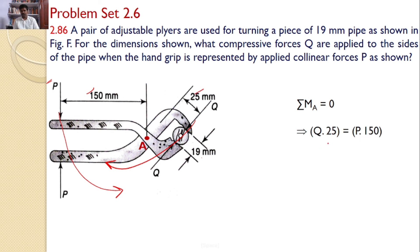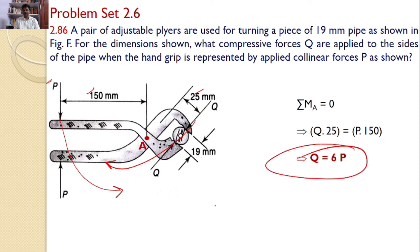So I can say Q × 25 = P × 150, or from this equation I can calculate Q = 6P, which is the answer for the given problem.